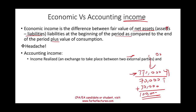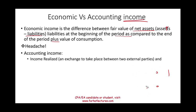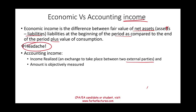Instead, we use accounting income. For income to be recognized, it must be realized — there must be an exchange between two external parties — and the amount must be objectively measurable. For example, if an employee embezzles money, that's income to the employee: there's an exchange (the employee took the money from an external party) and the amount is known. Measuring fair values of a car, boat, motorcycle, multiple homes, and computers at period end is a big headache — hence we use the accounting income approach.